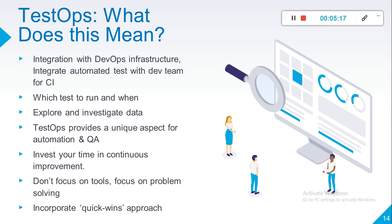We need to integrate our automated tests with the development team for continuous integration, and decide which tests to run and when — across staging and production environments. We need to identify automated test tools that run periodically and analyze data from continuous dynamic monitoring tools. TestOps is a unique aspect of software development process automation in QA. We need to adopt change, not remove our role. Invest time in continuous improvement, focus on problem solving, not tools, and analyze where we can speed up testing and automate the process. Incorporate a quick win approach.